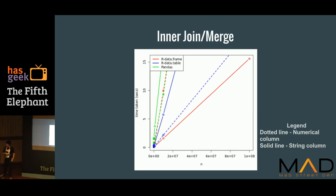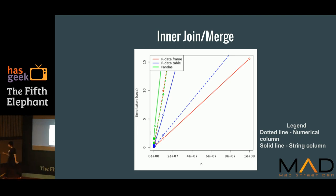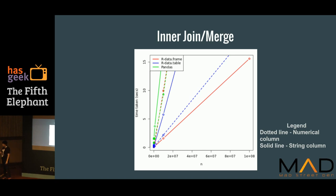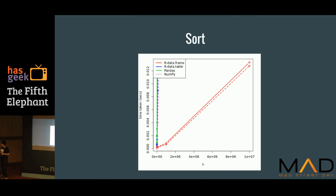Now we'll go to merge, which is an inner join. The blue, which is again R data.table, is consistently performing well. As an exception, data.frame on a string column has performed well here, but it's an exception.